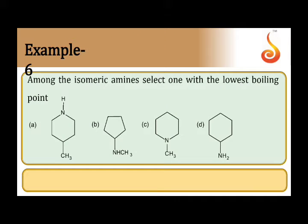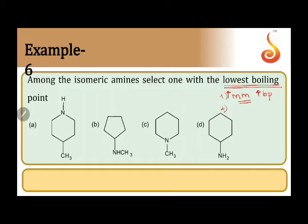Example 6: among the isomeric amines, select one with the lowest boiling point. There are many criteria for boiling point comparison. The first criteria is molecular mass — whichever organic compound has higher molecular mass will have a higher boiling point. The second point is that if the dipole moment is high, the boiling point is high. But a much more important factor than dipole moment is hydrogen bonding.